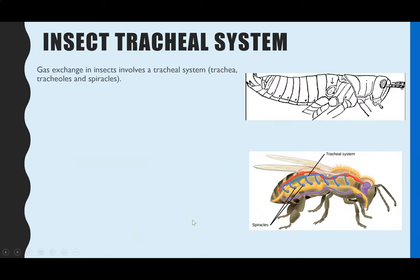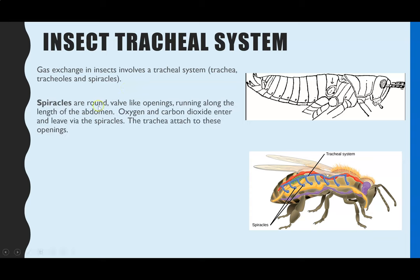Looking at the tracheal system, it involves trachea, tracheals, and spiracles — three structures within this system. The spiracles are round, valve-like openings meaning they can open and shut, and they run along the length of the abdomen. Here on this insect you can see all of these tiny holes along the abdomen — those are the spiracles, tiny circles on the outside which then lead into the tracheal tube system.